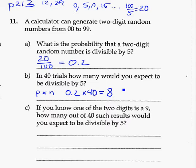For part C, they give us some information here. So this becomes sort of a conditional probability problem as well. If you know one of the two digits is a 9, so that's given information to us. How many out of the 40, if we did 40 trials, would you expect to be divisible by 5? Well, first we have to figure out what are numbers that are going to be included in this group. We know one of the two digits is a 9.